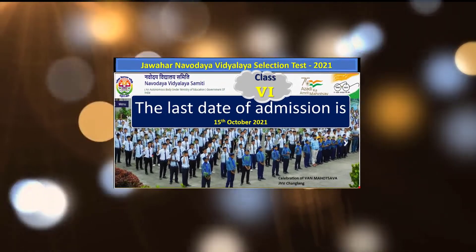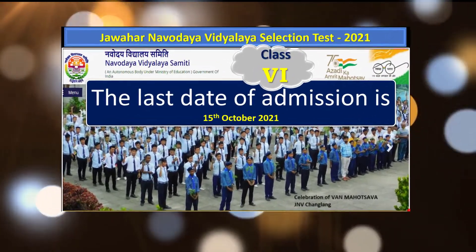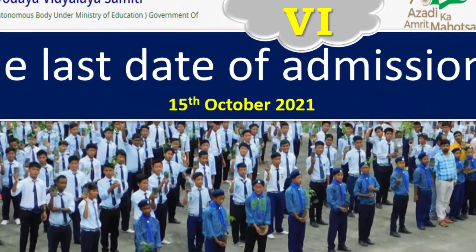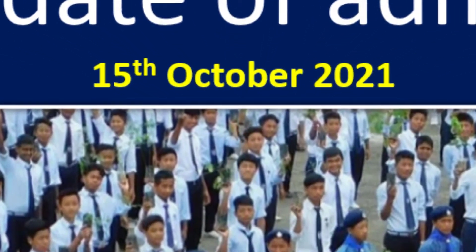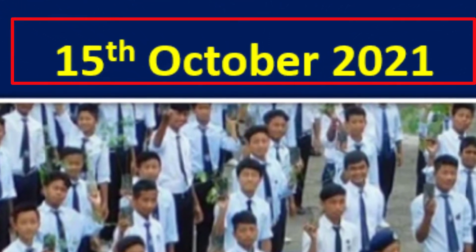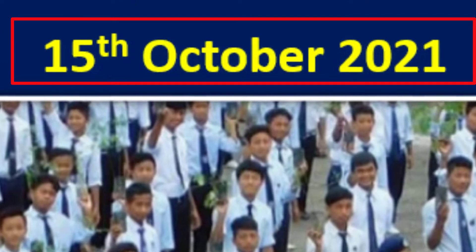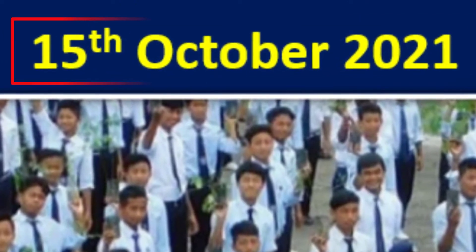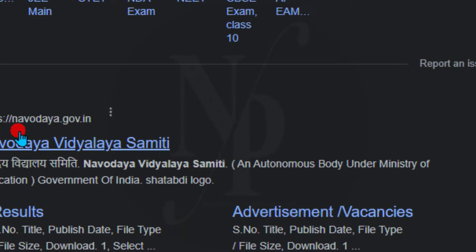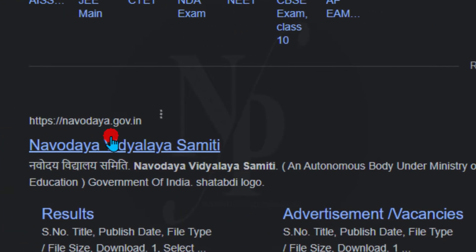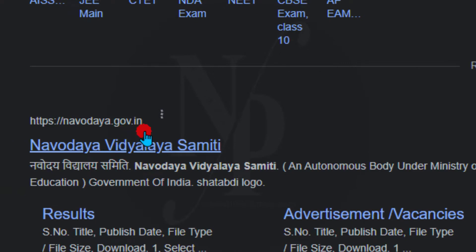The last date of admission for class 6 through JNVST 2021 is 15th October 2021. Let us see the official notification on this. Let us visit the official website of Navodaya Vidyalaya Samiti, navodaya.gov.in.